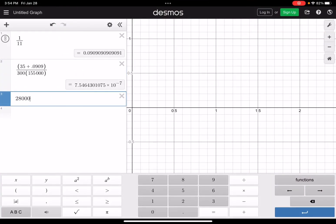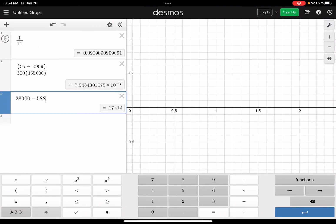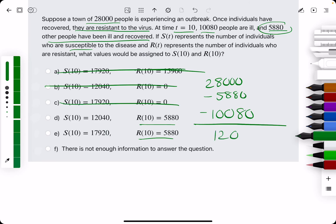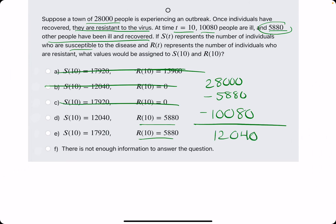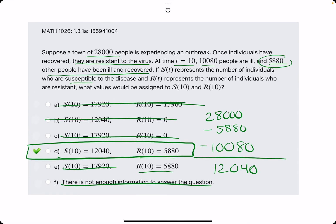Let's do 28,000 minus 5,880 minus 10,080. As a result, we get 12,040. It looks like D has that value. We eliminate E and F, so D is in fact our answer.